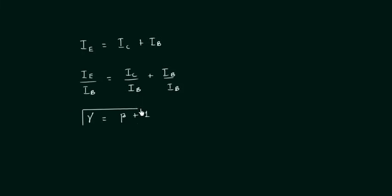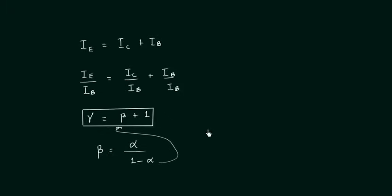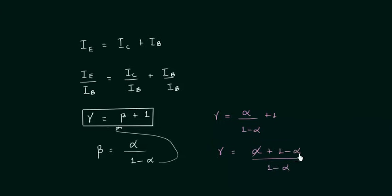So the relation between gamma and beta is: gamma is equal to beta plus 1. We already know that beta is equal to alpha divided by 1 minus alpha. If we substitute this value of beta, we have gamma equal to alpha divided by 1 minus alpha plus 1. When you simplify this, gamma is equal to 1 divided by 1 minus alpha.